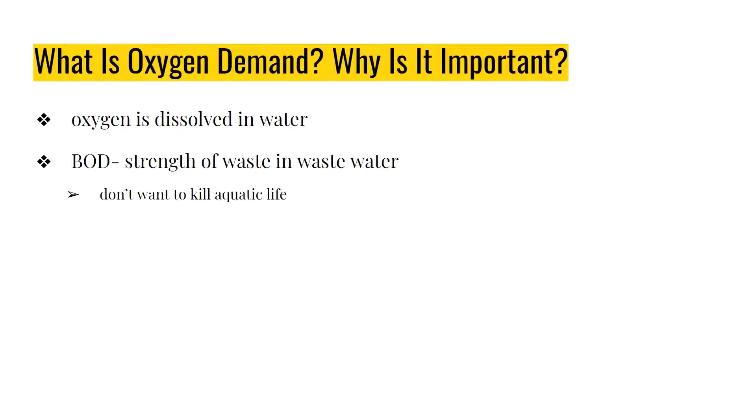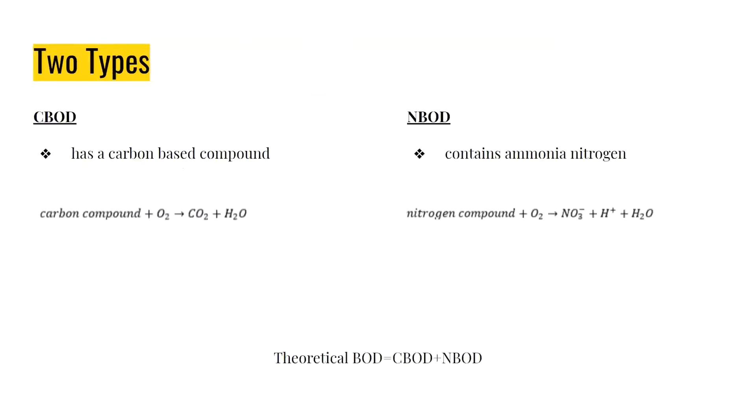The reason why environmental engineers like to know the BOD is if you discharge waste into a water source, and if the waste was left untreated or wasn't treated enough, it could deplete the oxygen reserves dissolved in the water and kill a lot of aquatic life. There are two types: CBOD, which is the carbon biochemical oxygen demand, and NBOD, the nitrogen biochemical oxygen demand.